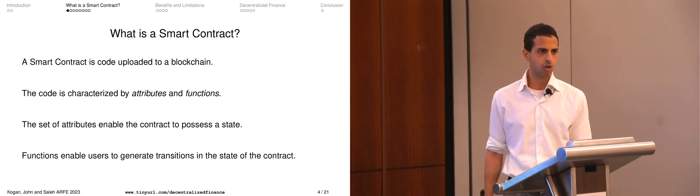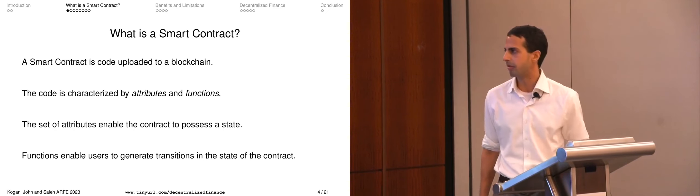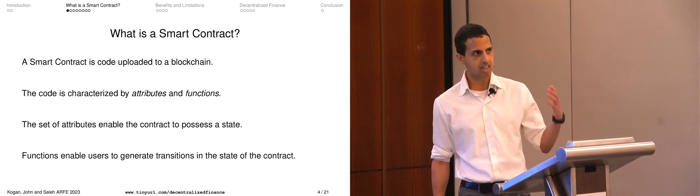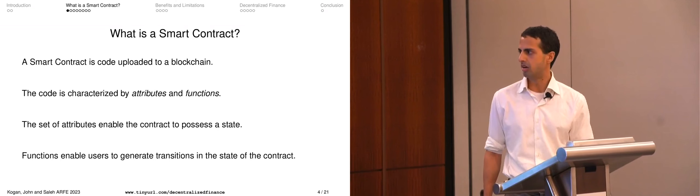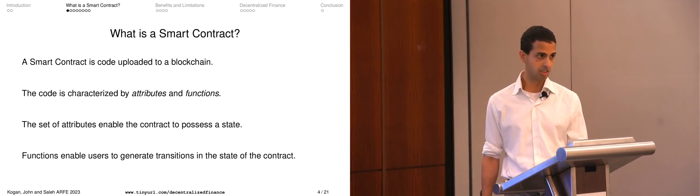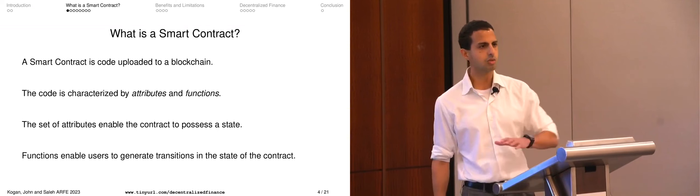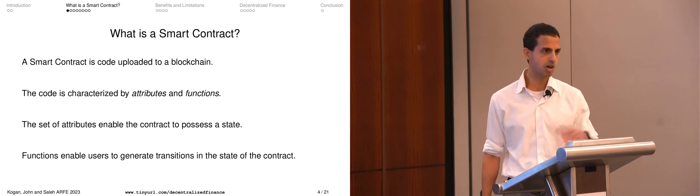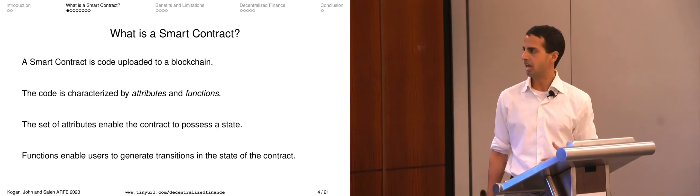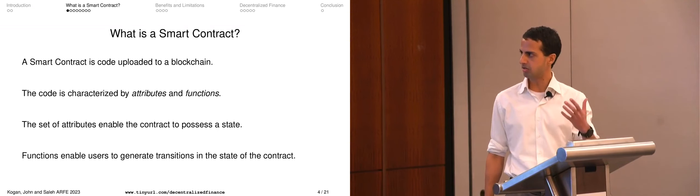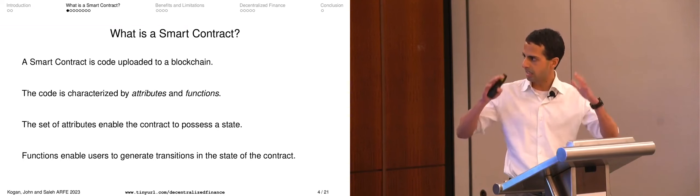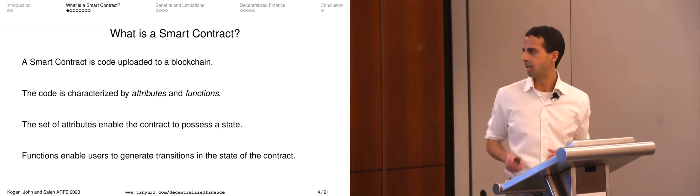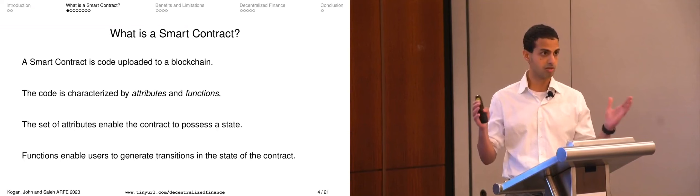At a high level, you can think of a smart contract essentially as code uploaded to a blockchain. The relevance of the blockchain has to do with security — once you put something on a blockchain it's very hard to reverse, which gets into ideas of commitment that I'll touch on later. For now, let's set that aside and just think of a chunk of code, because that's what smart contracts fundamentally are.